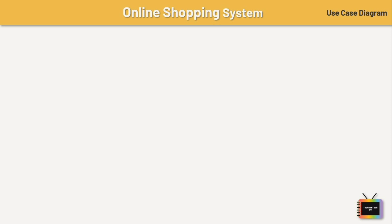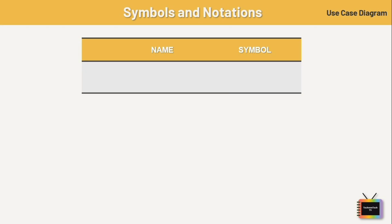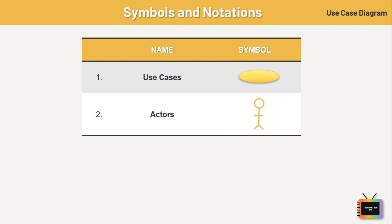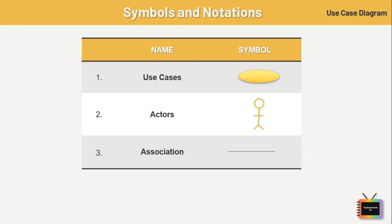To build one, we use a set of specialized symbols and connectors. The notation is straightforward. First, use cases are horizontally shaped ovals representing the different uses a user might have. Next, actors are stick figures representing the people employing the use cases. Associations are lines between actors and use cases — in a complex diagram it is important to know which actors are associated with which use cases.